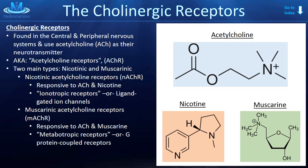The nicotinic acetylcholine receptors are named such because they are responsive to both acetylcholine and nicotine. They are ionotropic receptors, meaning they are ligand-gated ion channels — when stimulated by their neurotransmitter, they themselves become an ion channel. The muscarinic acetylcholine receptors, on the other hand, are named because they are responsive to acetylcholine and muscarin. They are metabotropic receptors, meaning they act through a second messenger system — specifically, they are G-protein coupled receptors.